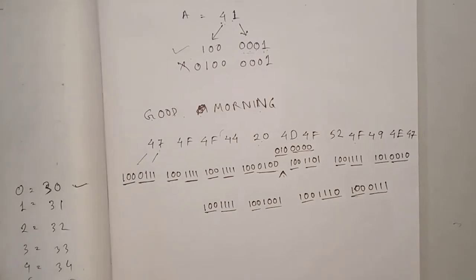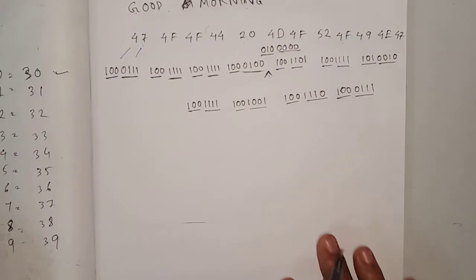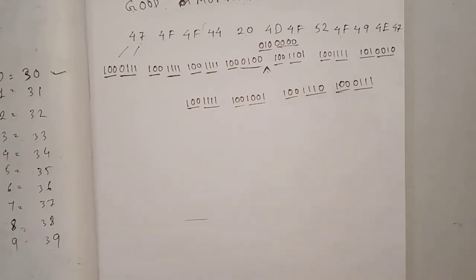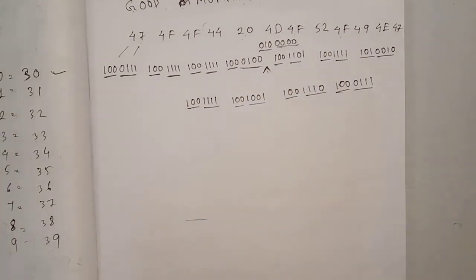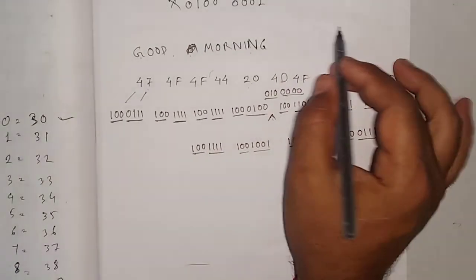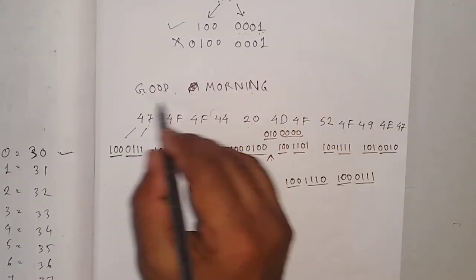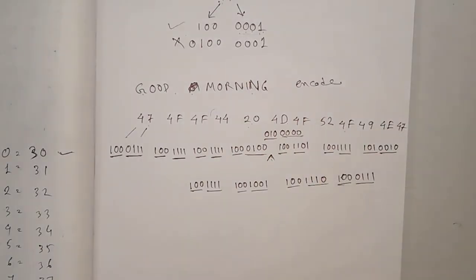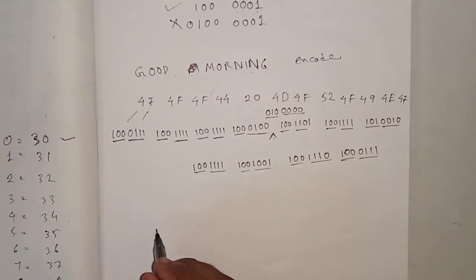Now we need to learn one more thing. We encoded the message — that was encoding, from 'Good Morning' to binary. Now we need to decode — that is, going from binary back to English.